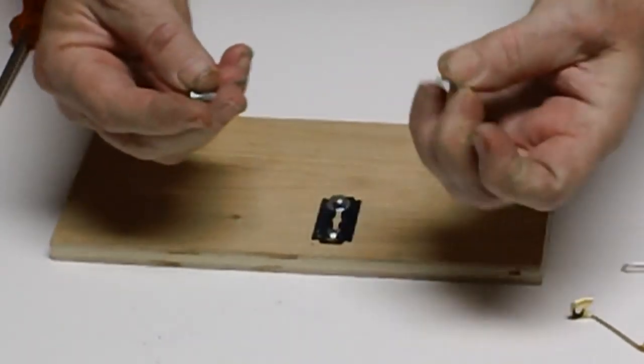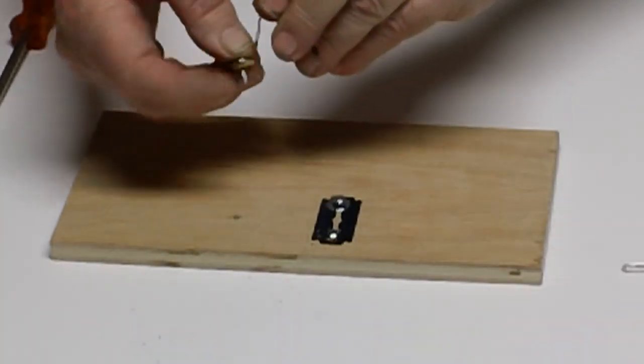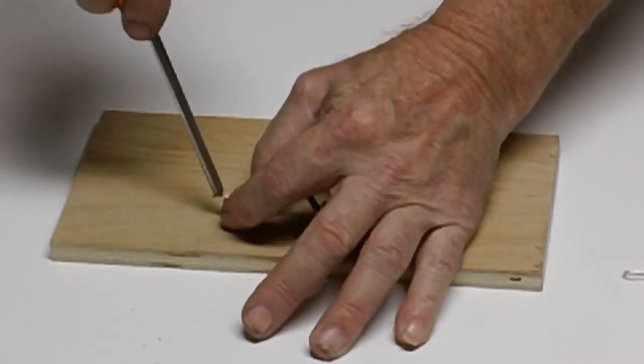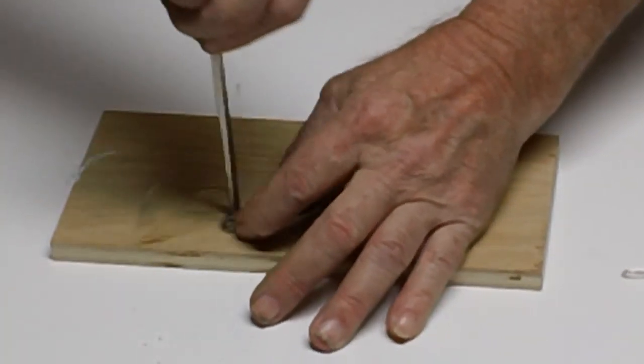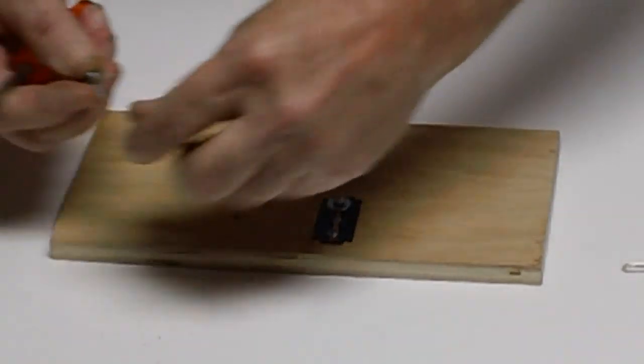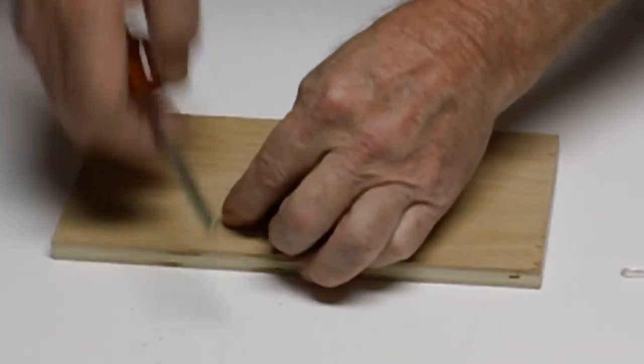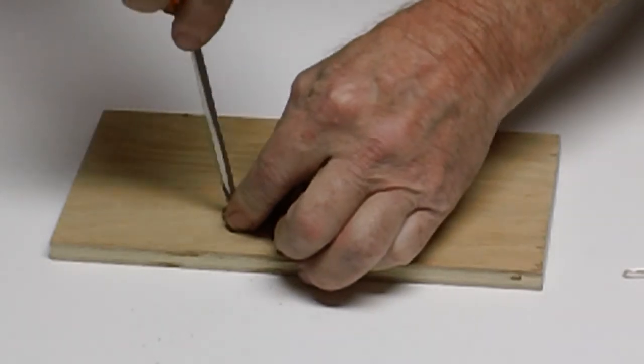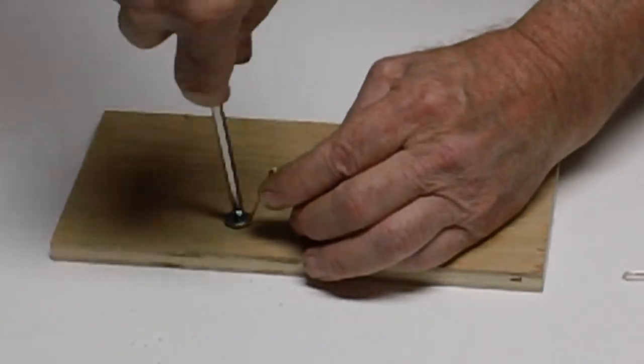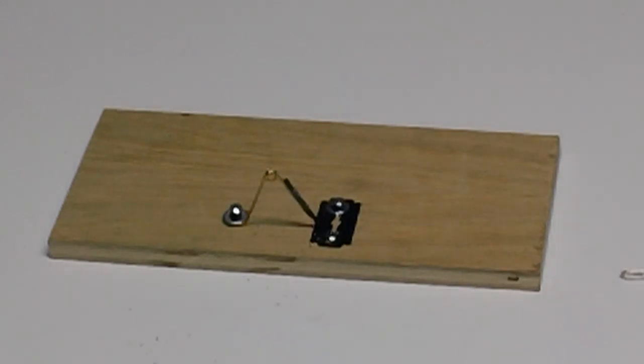Then take your screw and your washer, put it through the eye of the pin, set it over the hole. And set it over the hole. And then this time carefully get it started. Now don't screw this one in all the way either, because you want room to be able to put your wire underneath there.